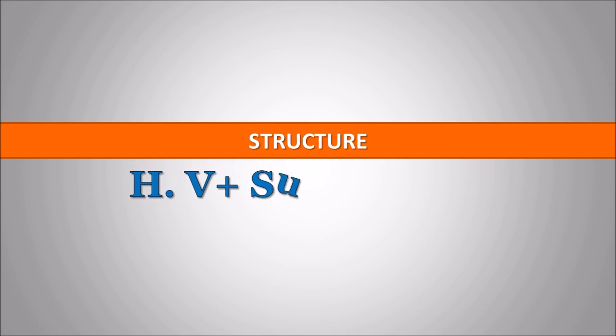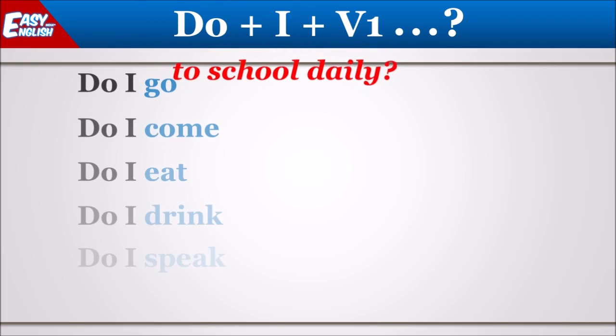In order to make positive interrogative sentences in present indefinite tense, you will need to start the sentence with its helping verb, followed by subject and main verb, specifically its first form. So let's see some examples.